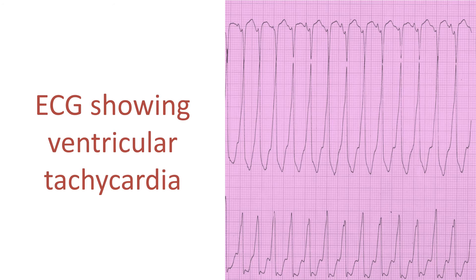Important manifestations of cardiac sarcoidosis include electrical conduction abnormalities, heart rhythm abnormalities, heart failure, and rarely sudden death. An important heart rhythm abnormality is ventricular tachycardia, a dangerous fast rhythm originating from the lower chambers of the heart.